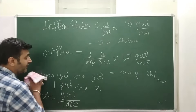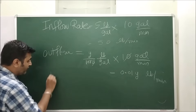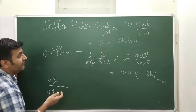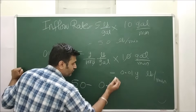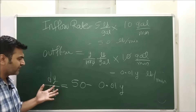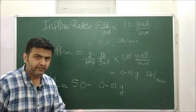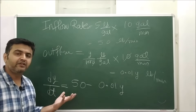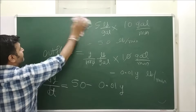We now have both rates. Substituting into Equation 1: dy/dt = 50 − 0.01·y. This is a linear differential equation, and it can also be solved using the variable separable method. The variables are y and t, so we separate them.